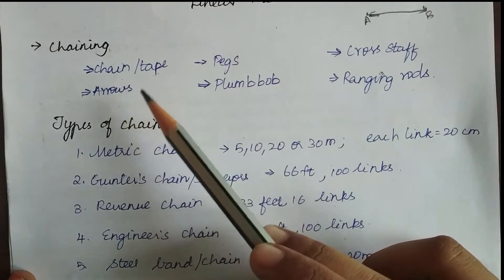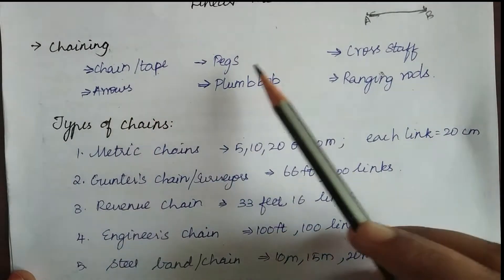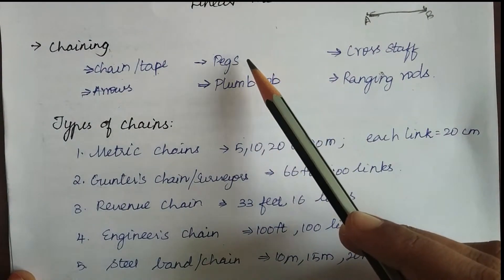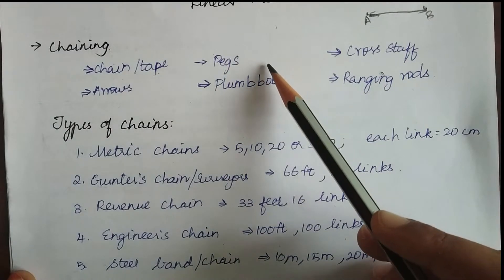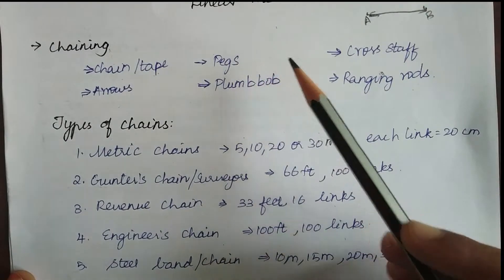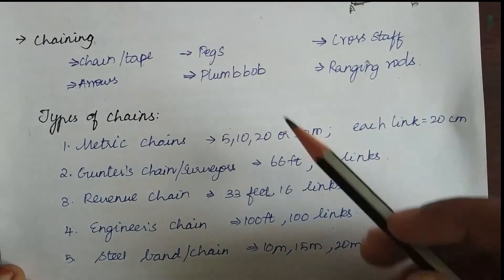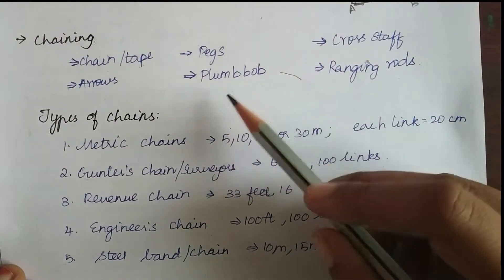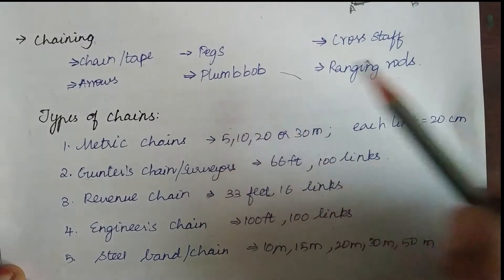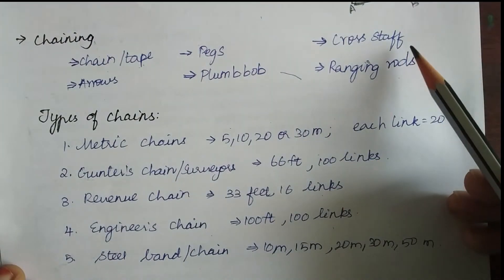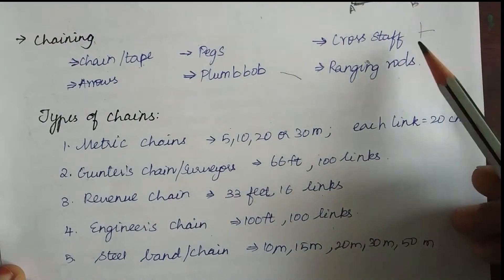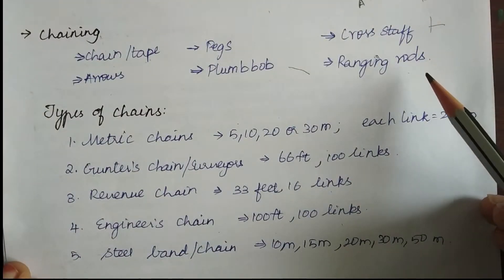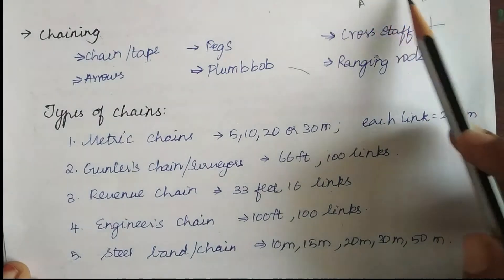Pegs are wooden objects which are used to mark the position of terminals or other stations. Plumb bobs are used when finding distance on sloping ground — we use plumb bobs to find verticality. Cross tabs are used to establish the perpendicularity of two lines. Ranging rods are used to find the distance with linearity.